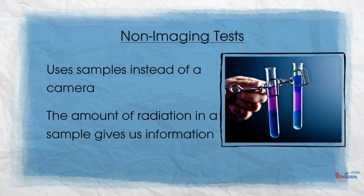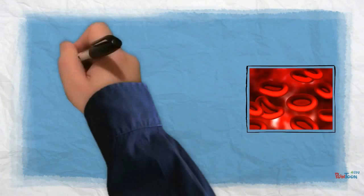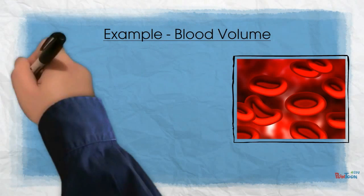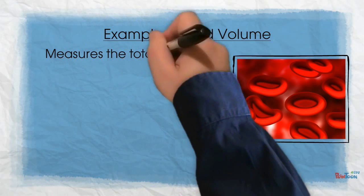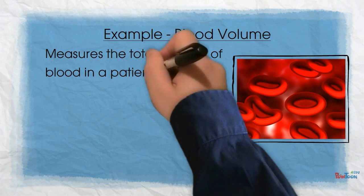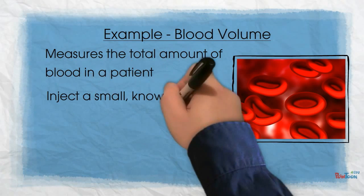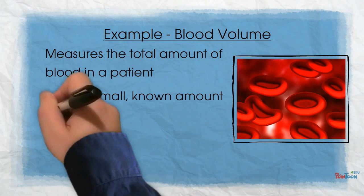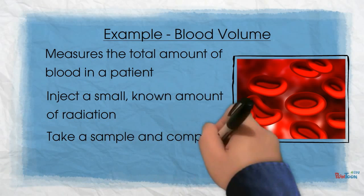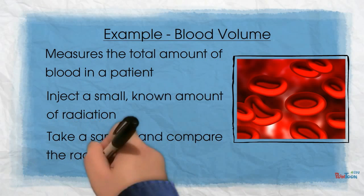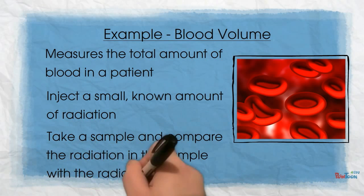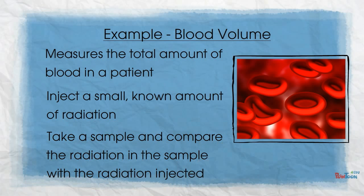Let's look at an example. A blood volume test measures the total amount of blood present in the patient. The patient is injected with a known amount of radiation, and we wait a small amount of time for this radiation to mix evenly with the patient's blood. We then take a blood sample and measure the amount of radiation in it. The amount of radiation in the sample is compared with the amount of radiation injected, and we can calculate the amount of blood in the patient.